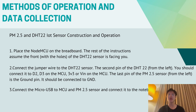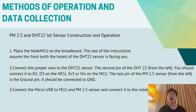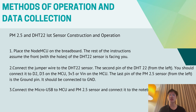To connect the jumper wire to the DHT22 sensor, the second pin of the DHT22 should connect to D2 and DT on the MCU, and VCC or VIN on the MCU. The last pin of the PMS5003 sensor, the GND pin, should be connected to GND. Then connect the microUSB to the MCU and PMS5003 sensor and connect into the notebook.